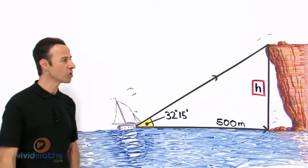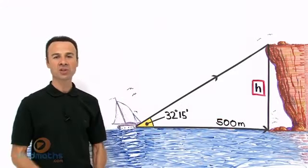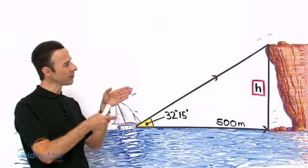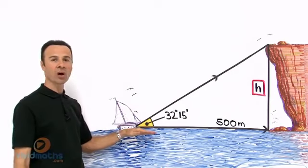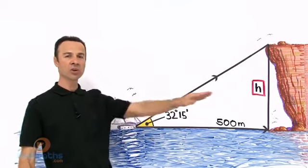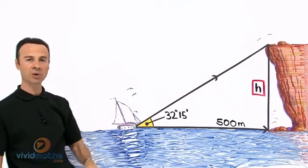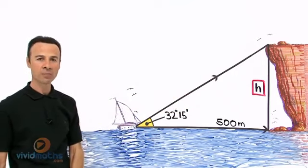She notices this cliff 500 meters out from where she is, so she gets a protractor out and measures the angle of elevation. The angle of elevation is from the horizontal or mean sea level upwards to the target of your measurement, which in this case is the top of the cliff. She's aiming right there to the apex of that cliff. She measured 32 degrees 15 minutes.